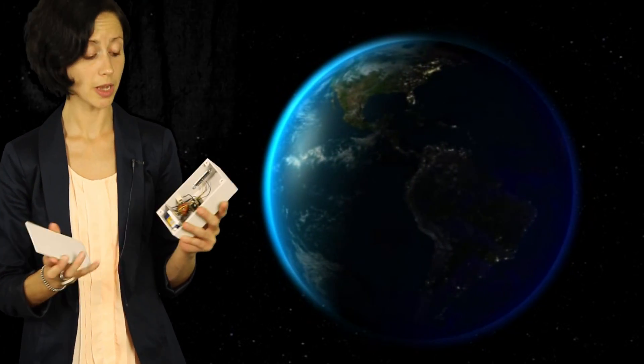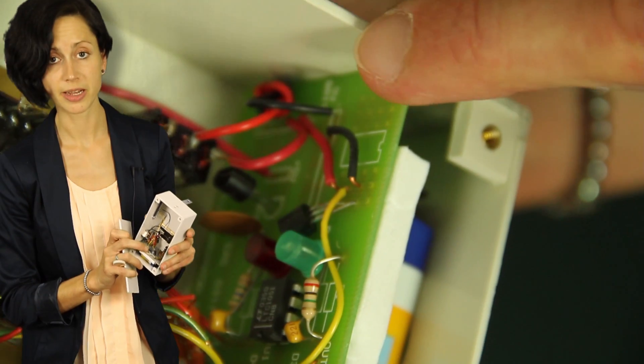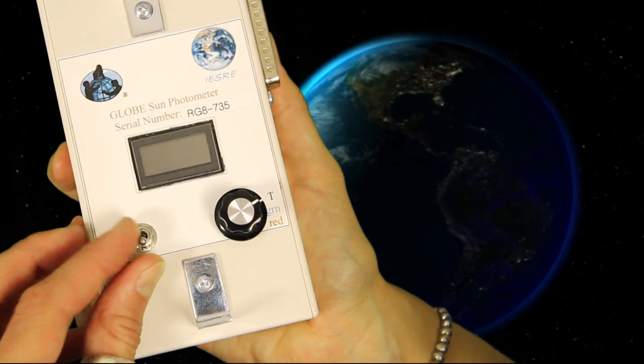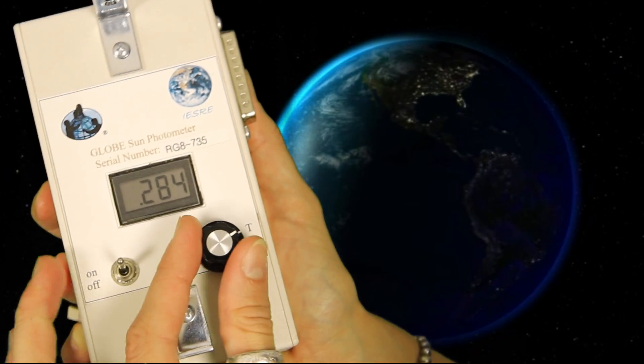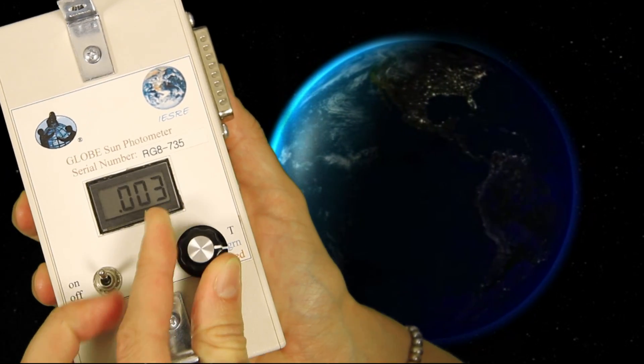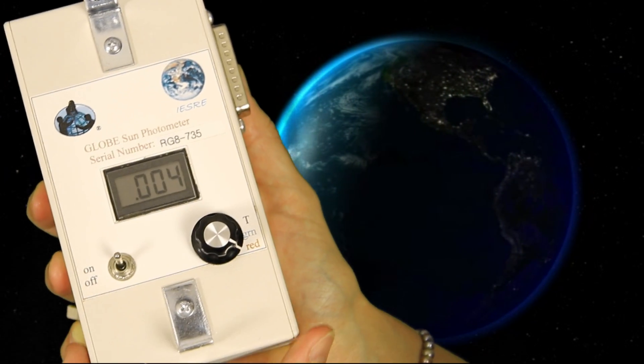How does such a sun photometer actually work? When you have a look inside, you see that there are a red and a green light. So this is how you turn on the sun photometer. Now it is on temperature. And you can turn this to measure the green LED and to measure with the red LED.